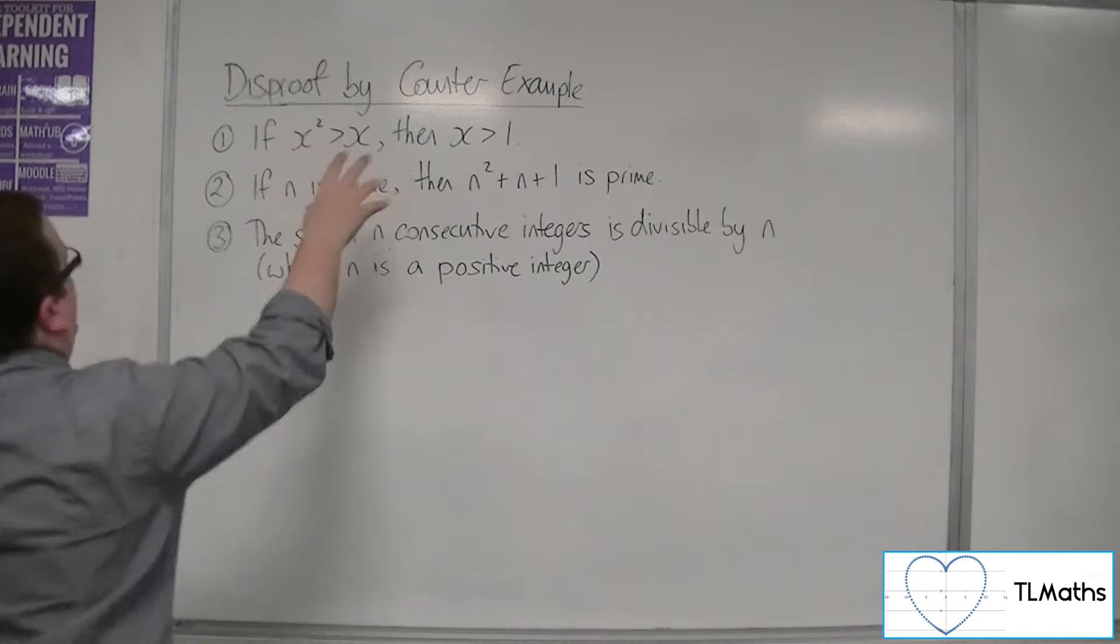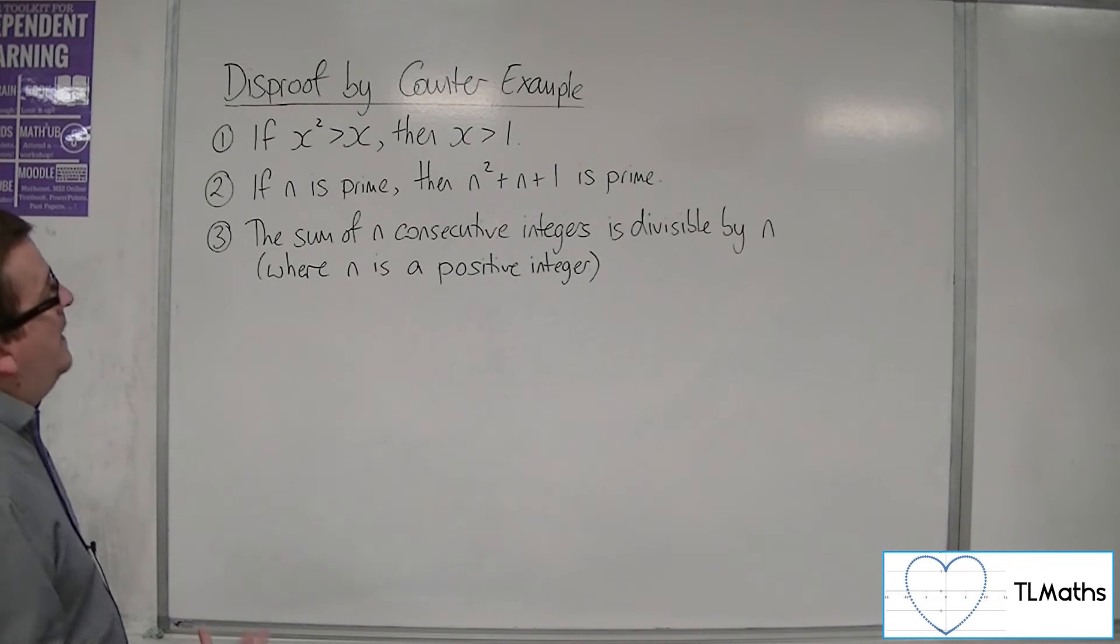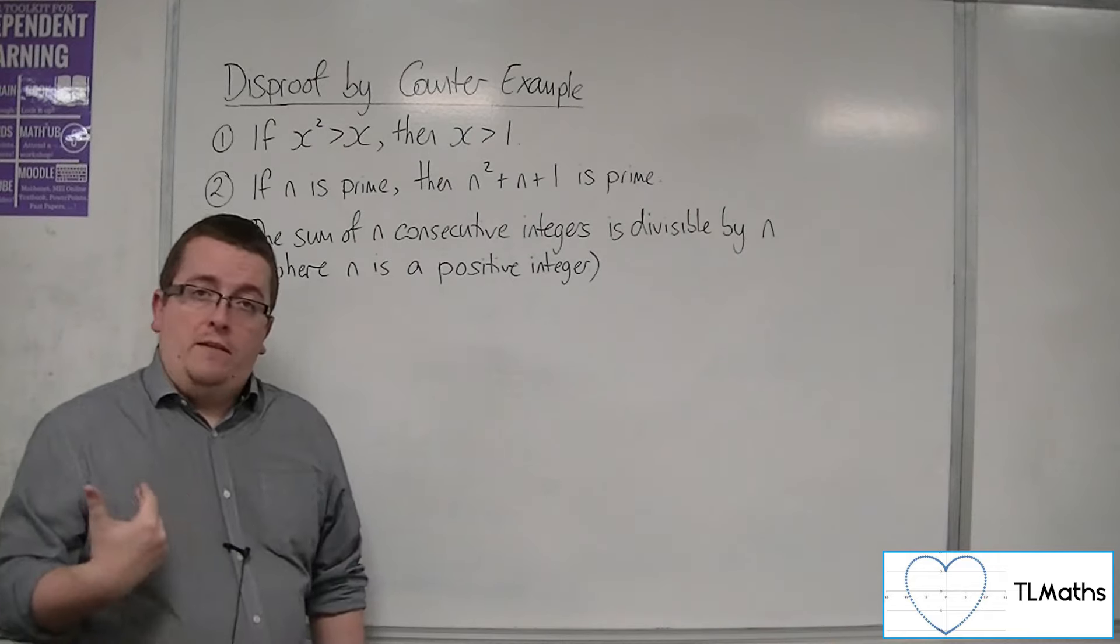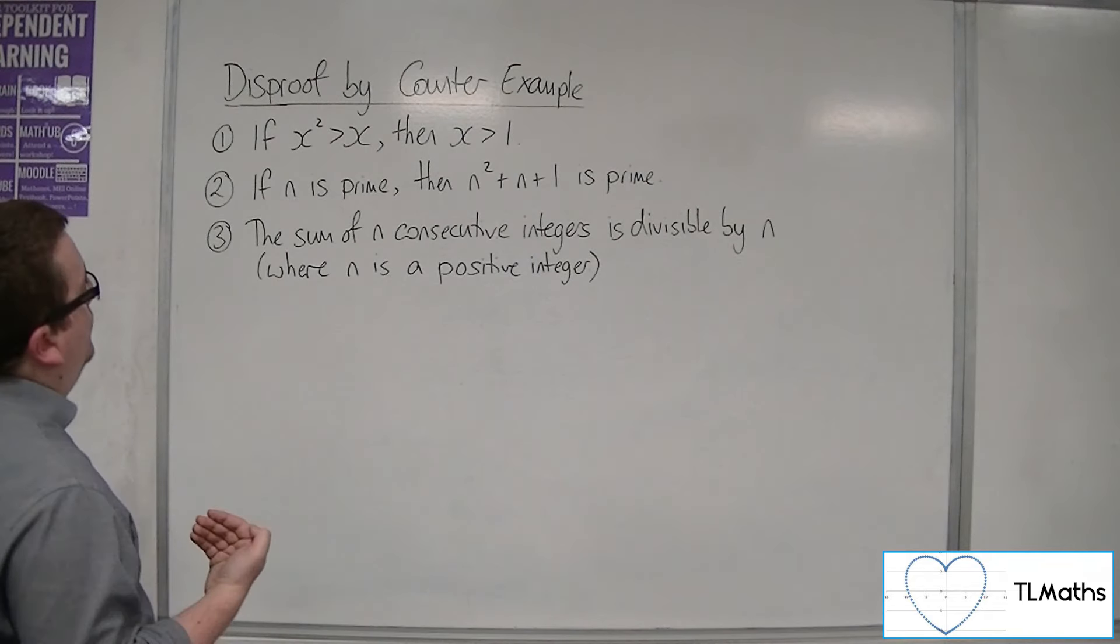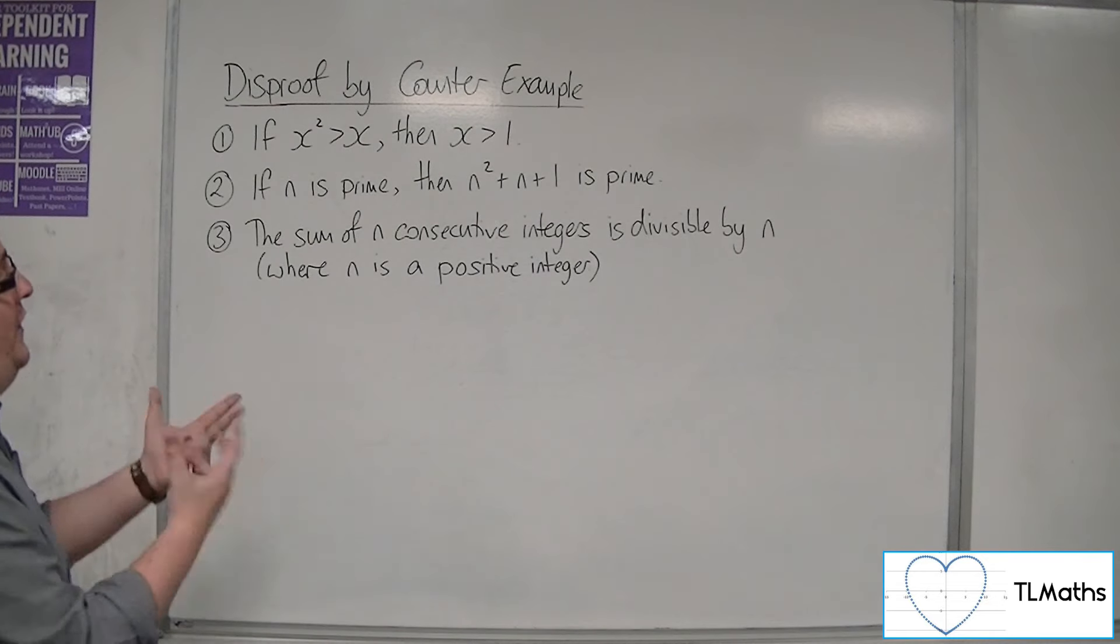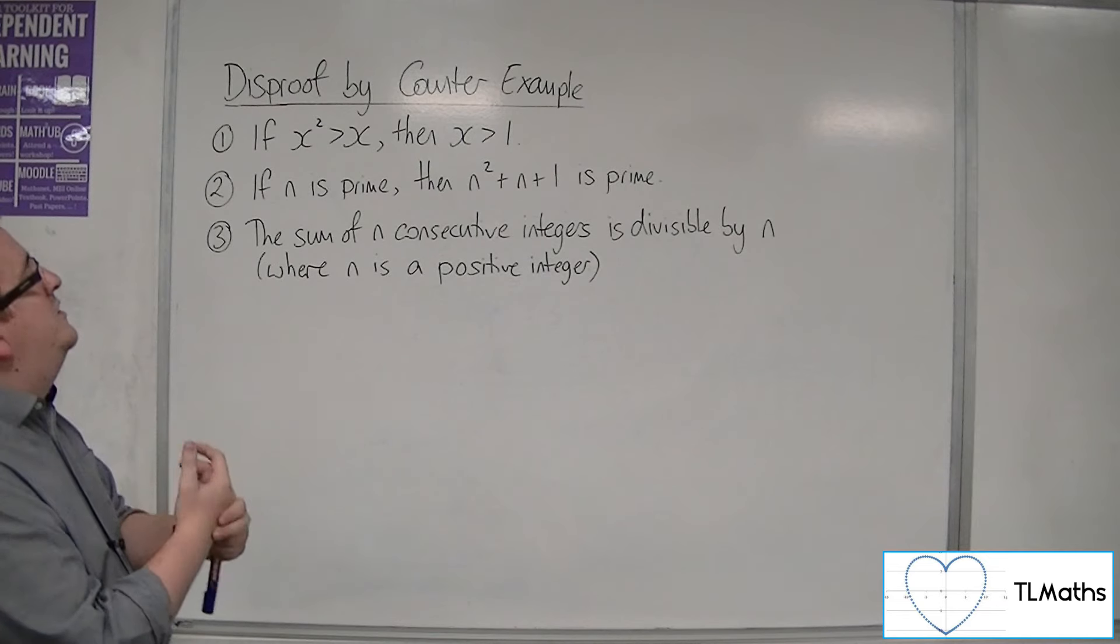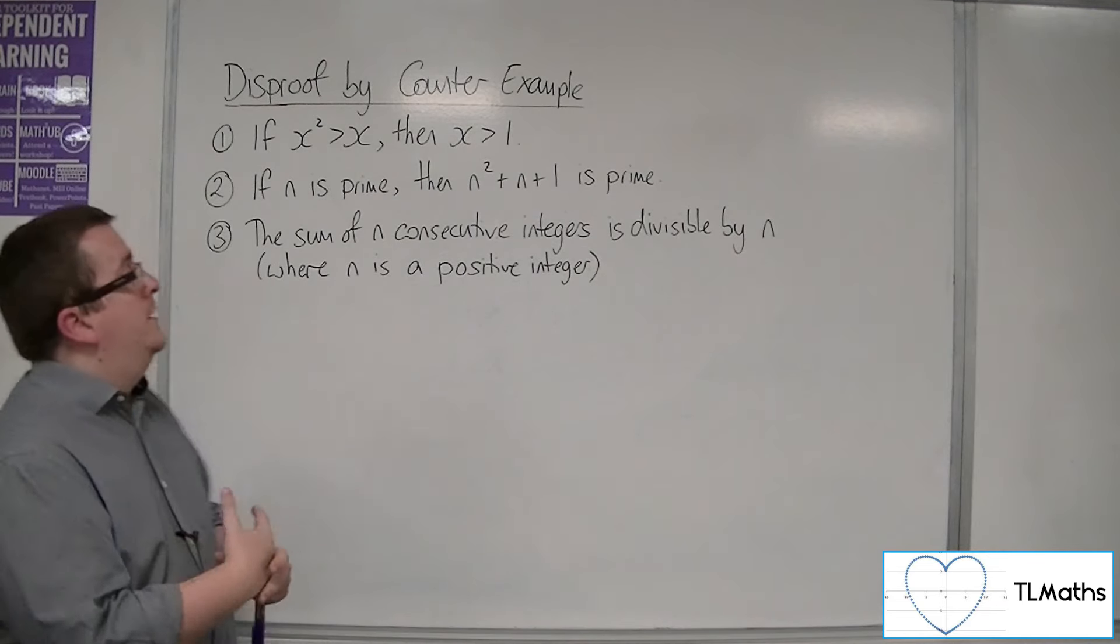Let's start off with this first one. If x squared is greater than x, then x is greater than 1. It sounds very clever, like it should be mathematically correct. But clearly, there is an example where this doesn't work.